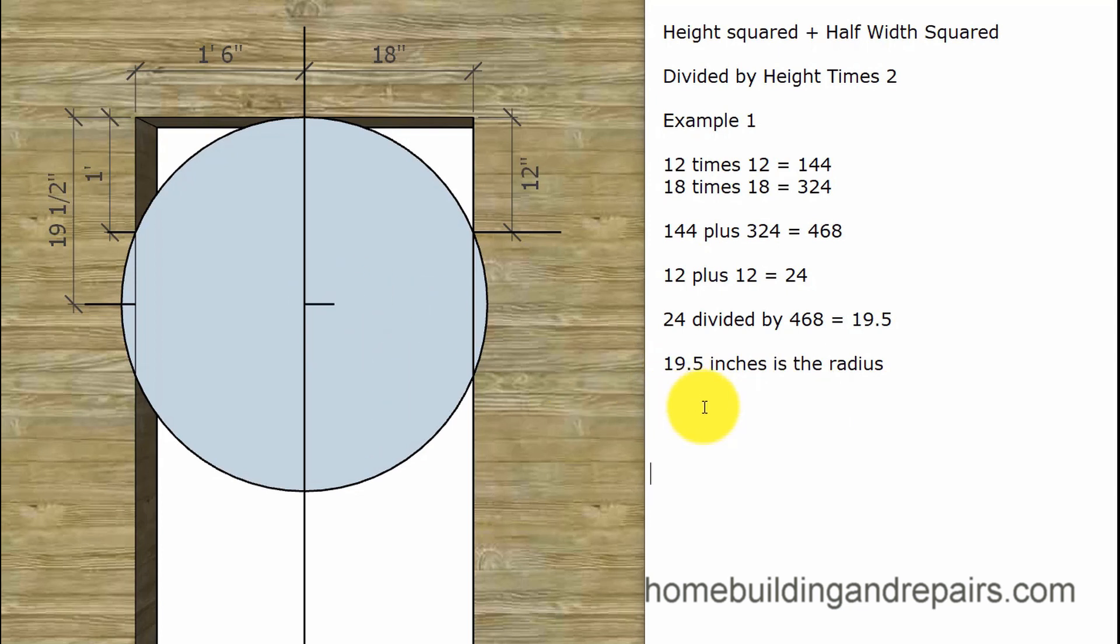Remember that of course when you're using your formula, it's not a bad idea to take a couple of these examples, grab a piece of paper and a calculator and work your way through it so that you're familiar with how these numbers get added together, multiplied and divided. So we're going to take and divide the height times 2 or 24 into 468. That gives us 19.5 inches as the radius. Now for those of you who understand this you don't need any more help. You can simply stop the video right here.